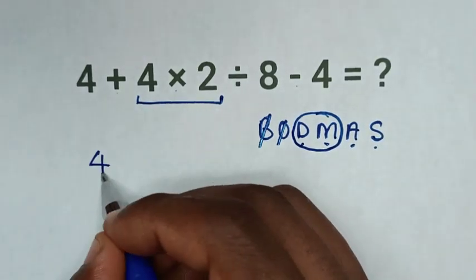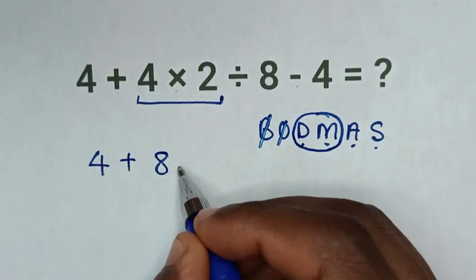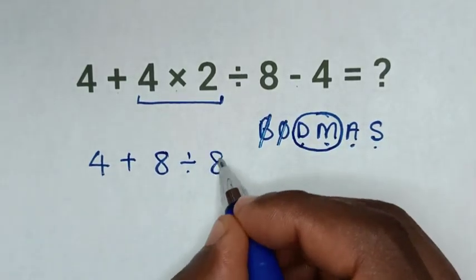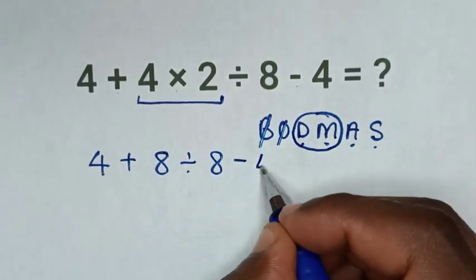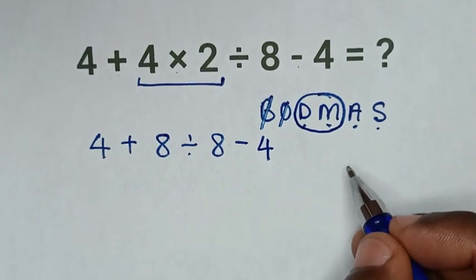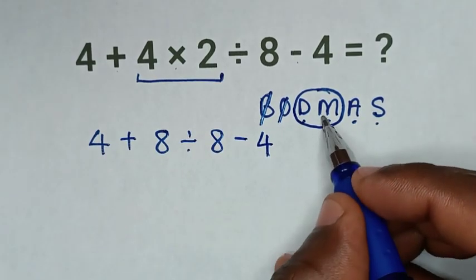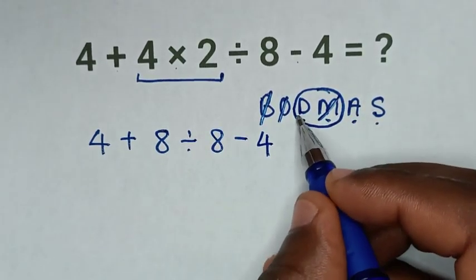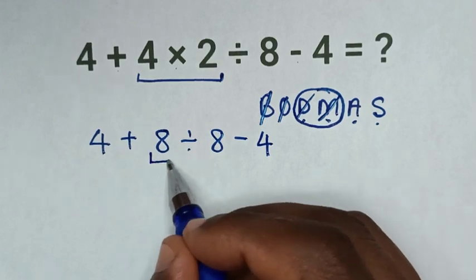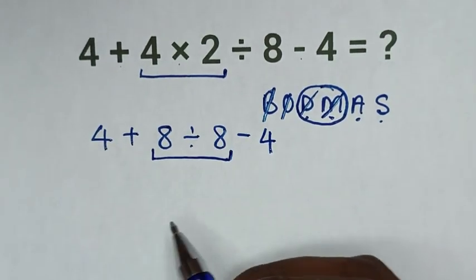Then after we already dealt with multiplication, we'll deal with this division here, 8 ÷ 8 which is 1. So it will be 4 + 1 - 4.